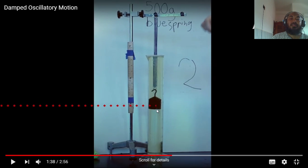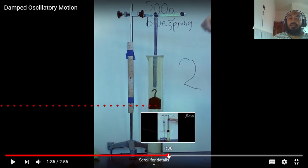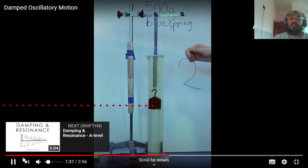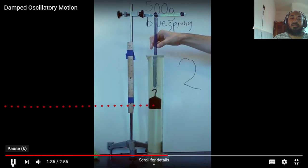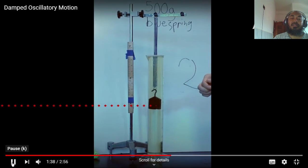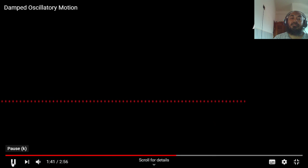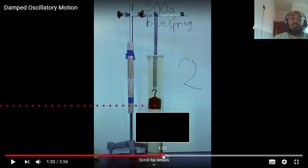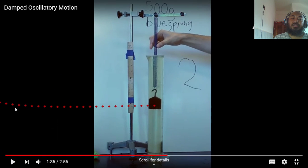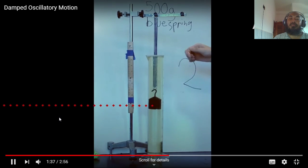Over-damping means the mass goes directly to the equilibrium position without any oscillation — it just drops and stops, with no oscillation at all.